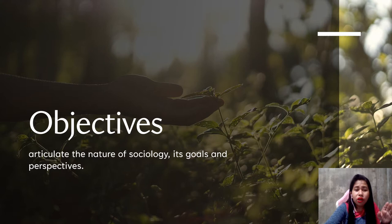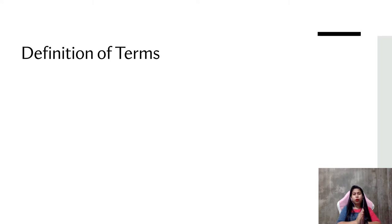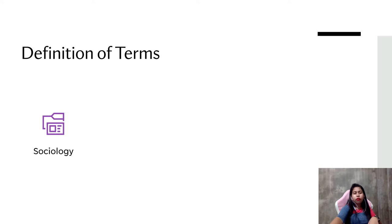Our objective for this lesson is to articulate the nature of sociology, its goals, and perspectives. Now let us define some important terms that we will encounter throughout the lesson. If you try to read the module, you will encounter these terms.